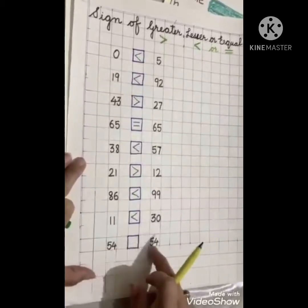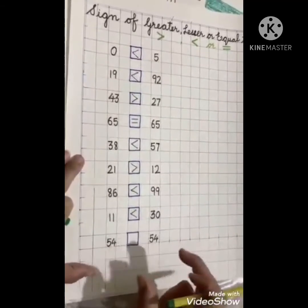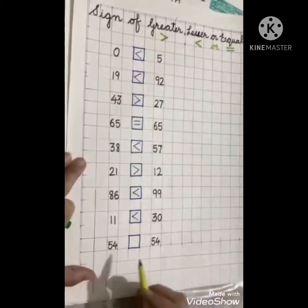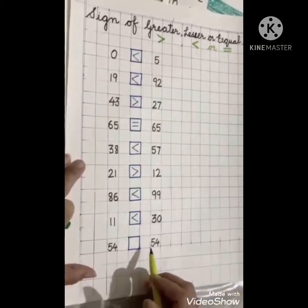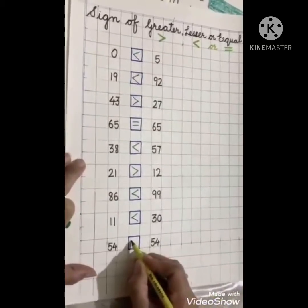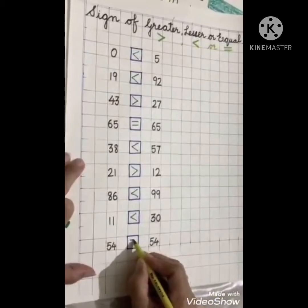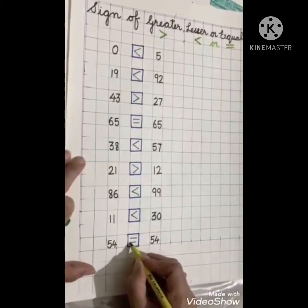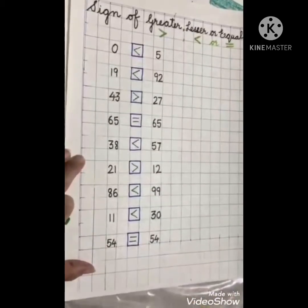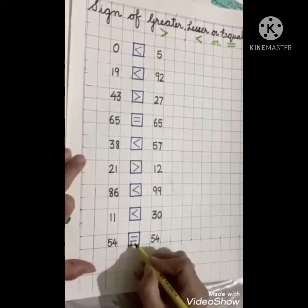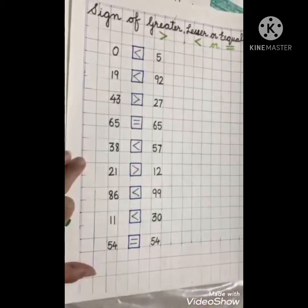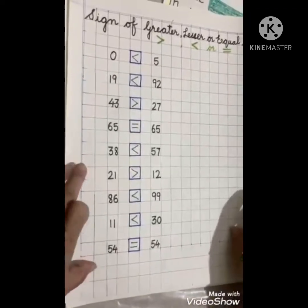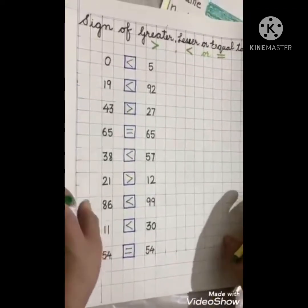Last, we have 54 and 54. Both are the same numbers. So the alligator is confused again — it goes this side, then comes this side. What do we get? The equal to sign. Both numbers are equal.